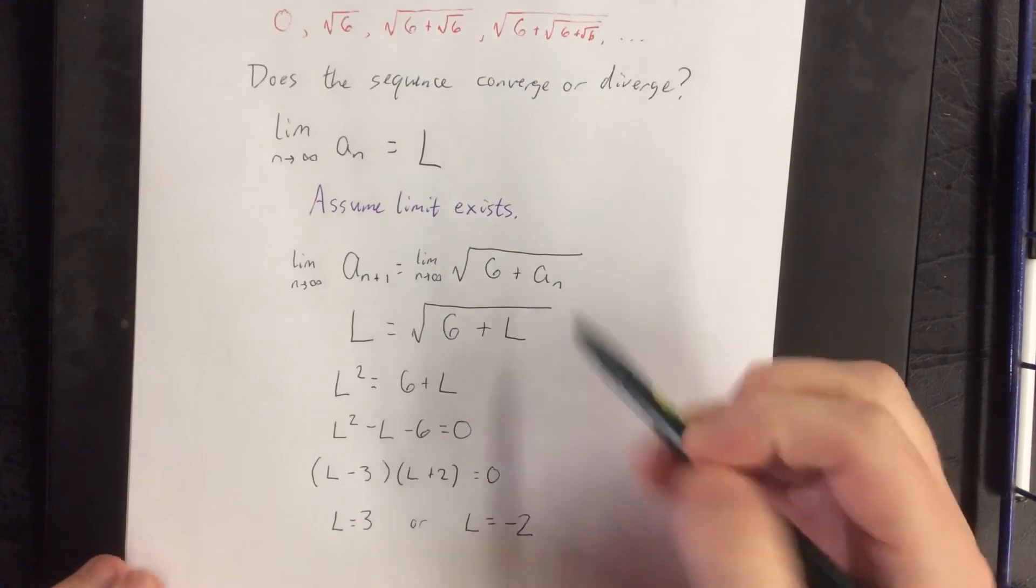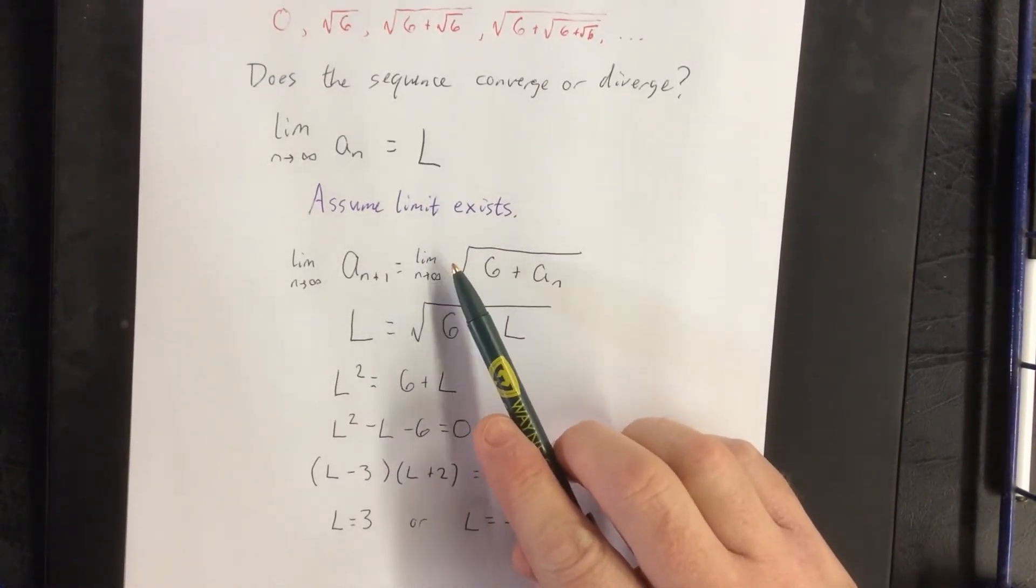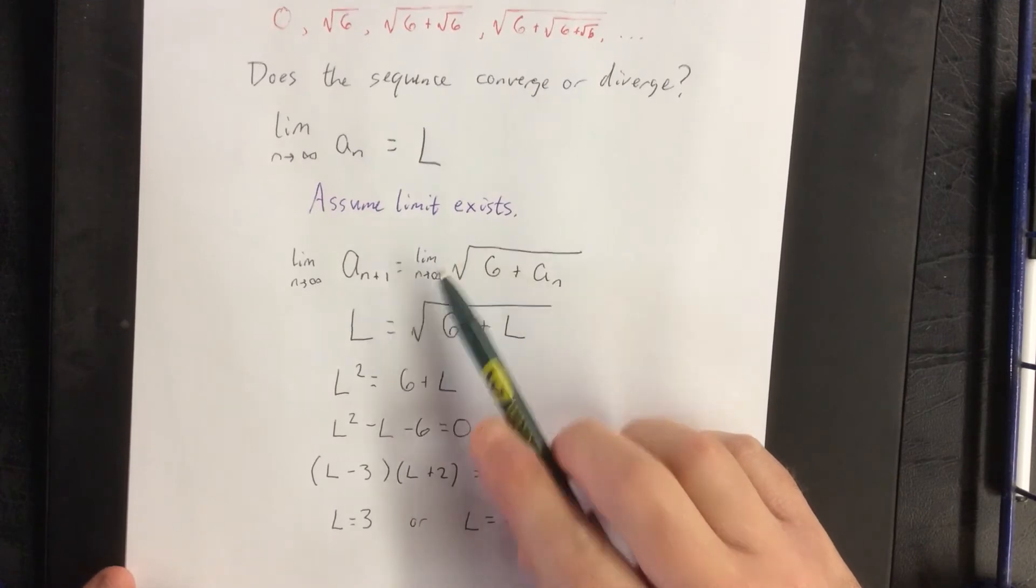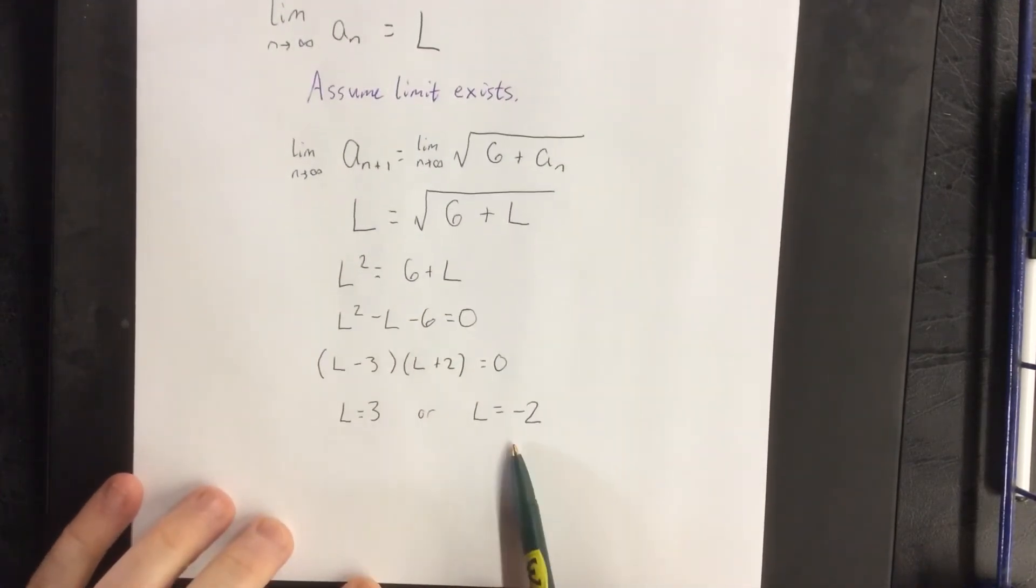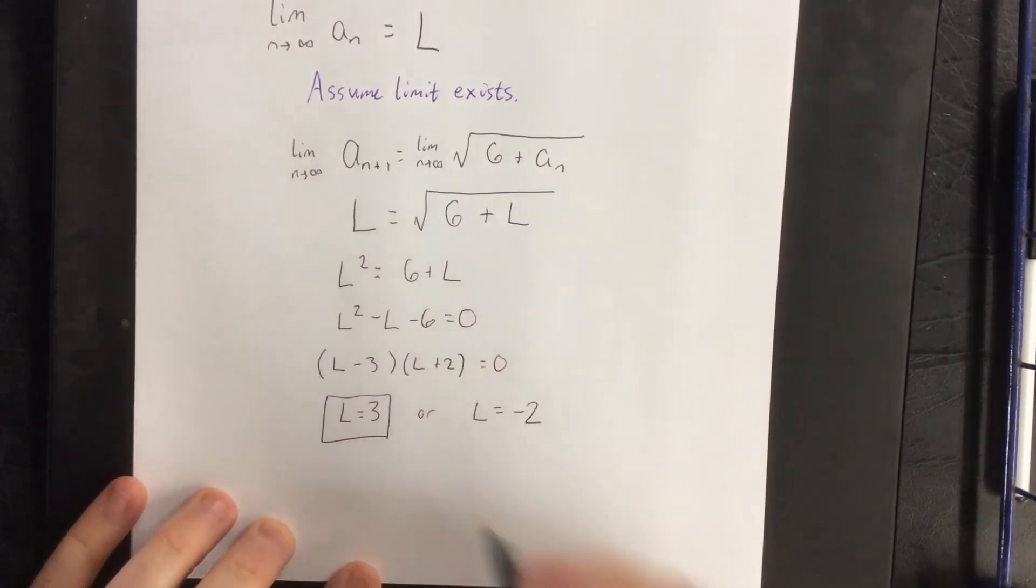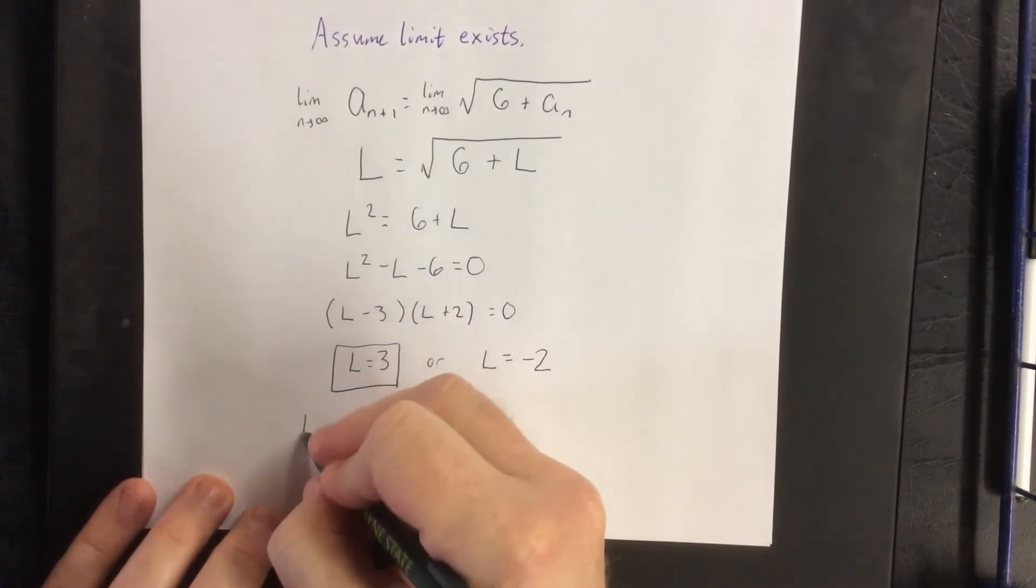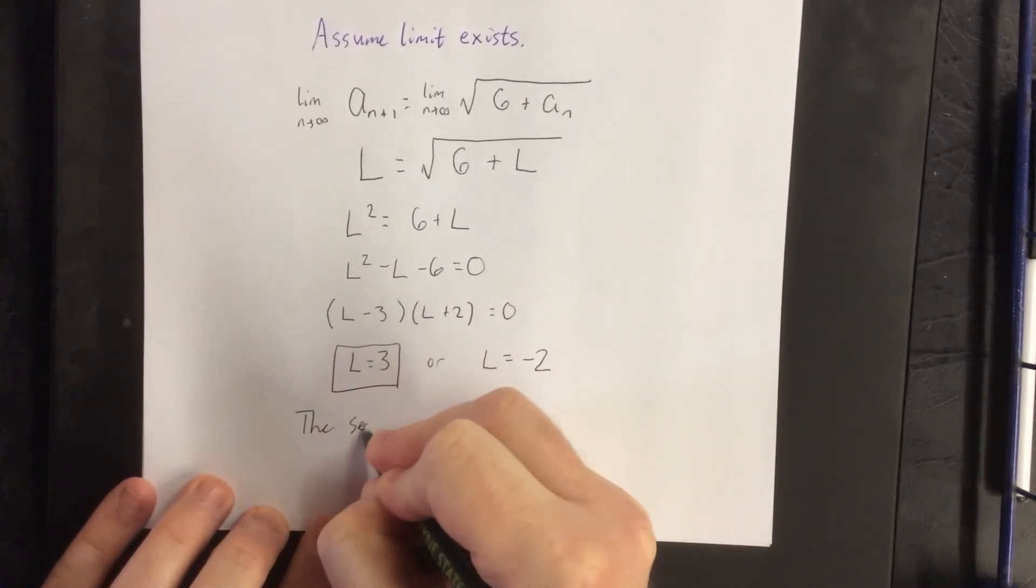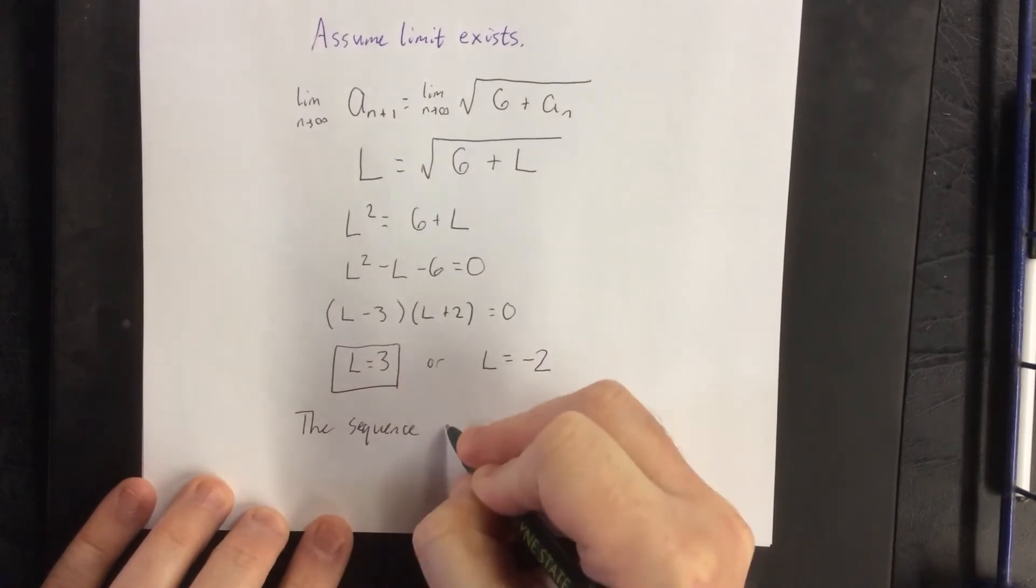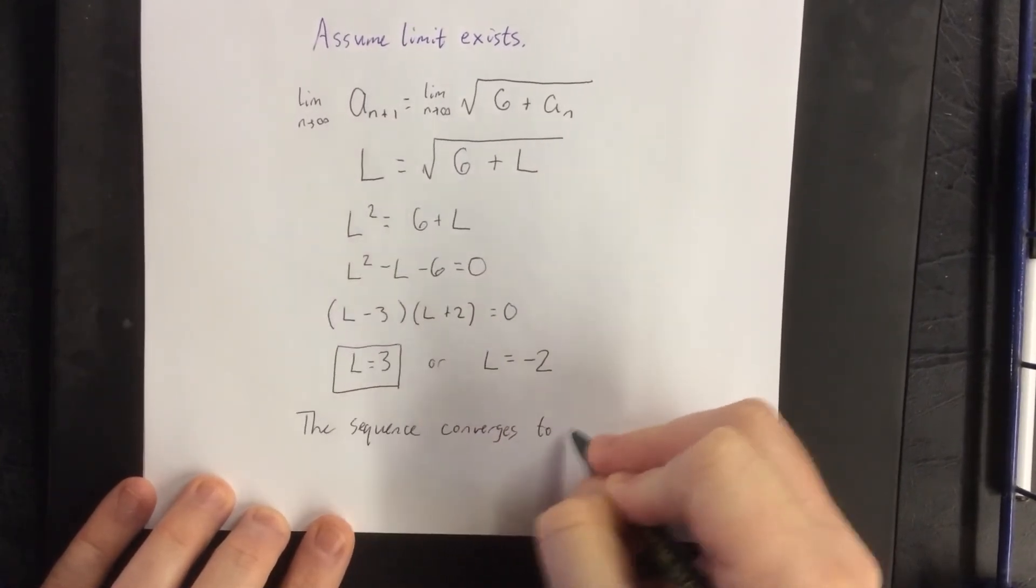Now none of the algebra would have changed here if I had defined this as the negative square root. If this had been defined as the negative square root we would have the limit of the sequence right here. But because it was defined as the positive square root you have the value right here. So we can draw the conclusion the sequence converges to 3.